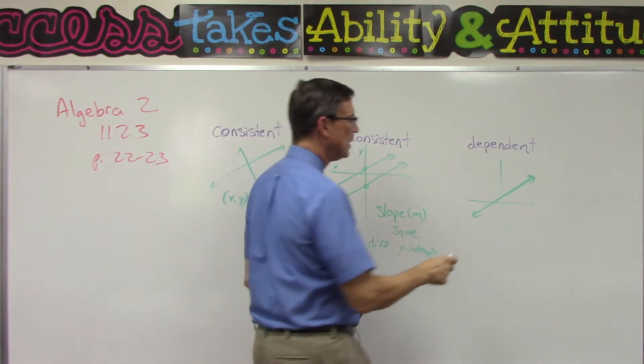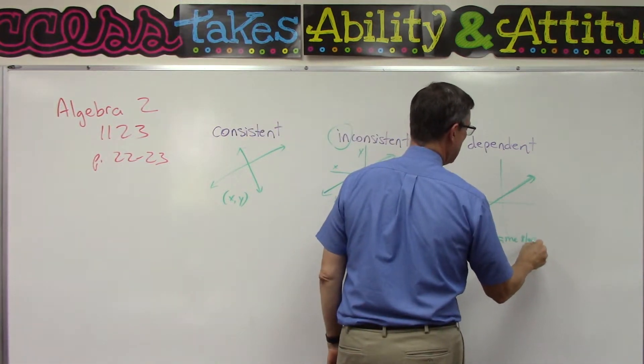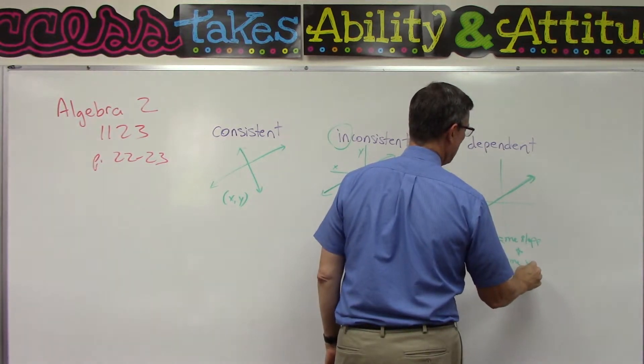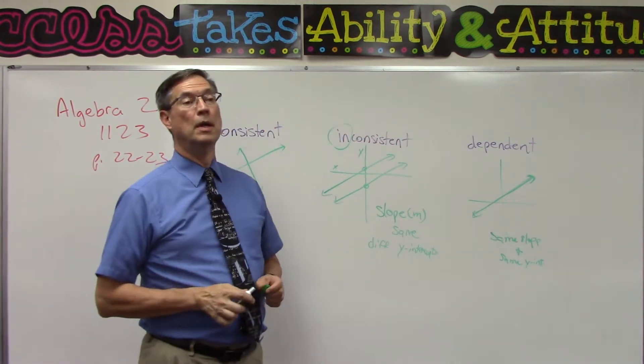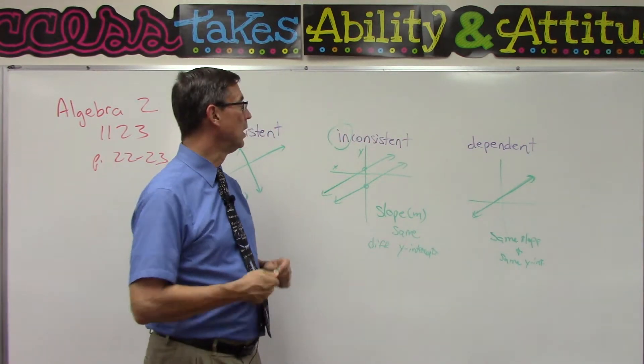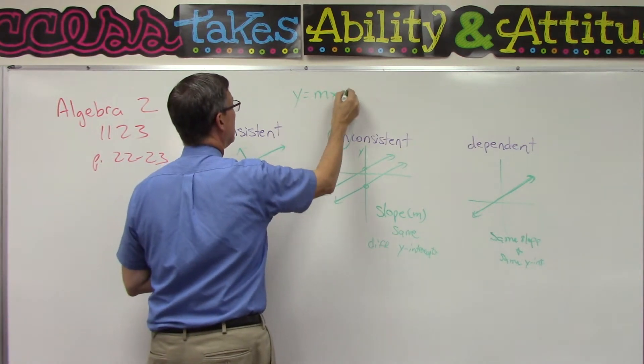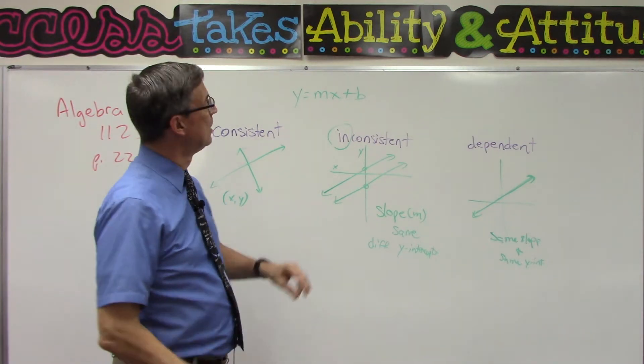They have the same slope and same y-intercept. You can take any line and rework it into the form y = mx + b. You could graph it, but you can also inspect it. First of all, see if they have different slopes.